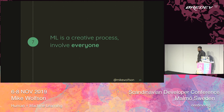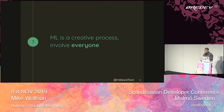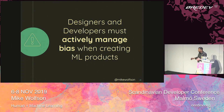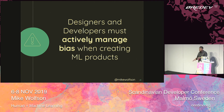The seventh principle is that machine learning is a creative process — make sure that you involve everyone. I want to call back to the main message of this presentation: designers and developers must actively manage their machine learning projects to understand where bias can creep in.